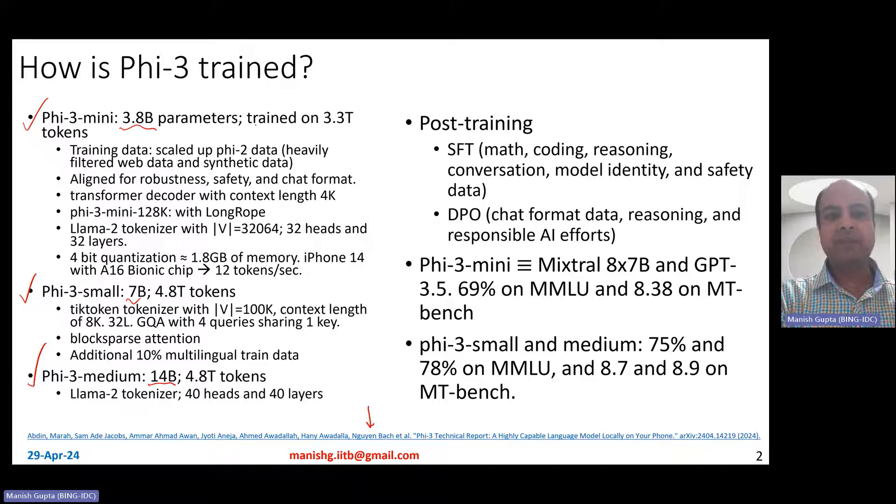Now more about Phi-3 mini, it has been trained on 3.3 trillion tokens, which is basically much larger compared to Phi-2's data. If you look at the training data, they still follow the same philosophy of using really clean data, filtered web data and synthetic data, but a scaled up version of Phi-2's data.